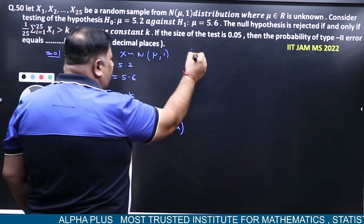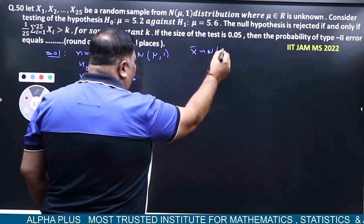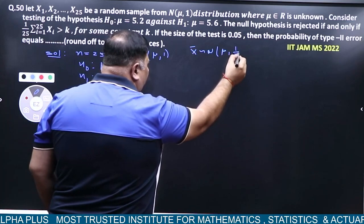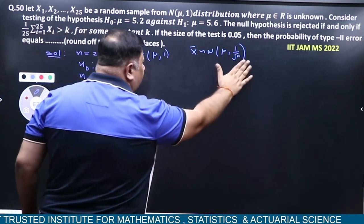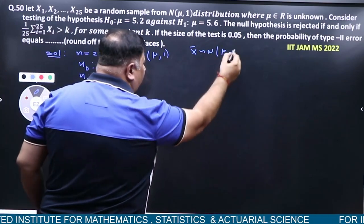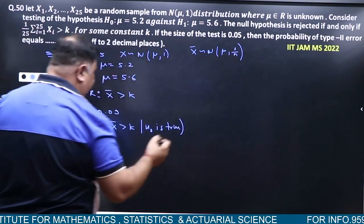So we need to know the distribution of X̄ also, right? X̄ follows normal(μ, 1/N), so 1 by N.